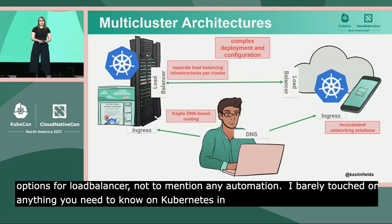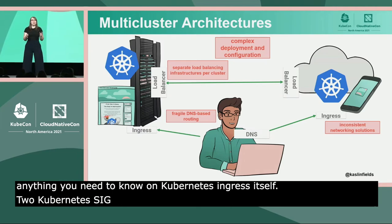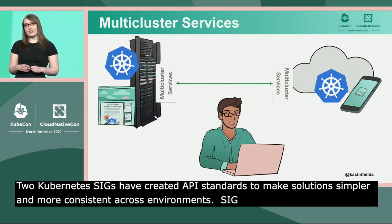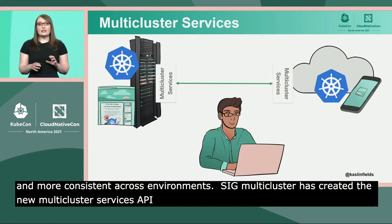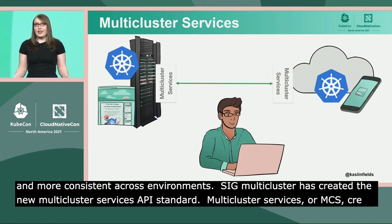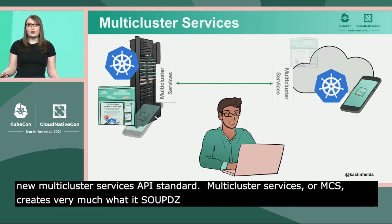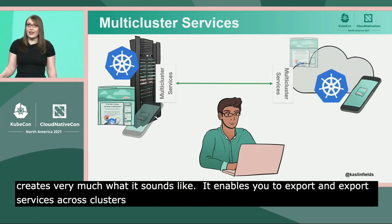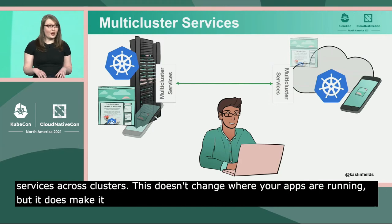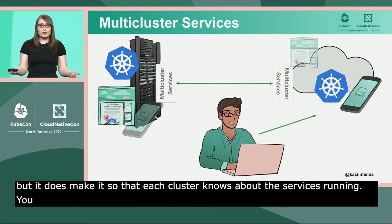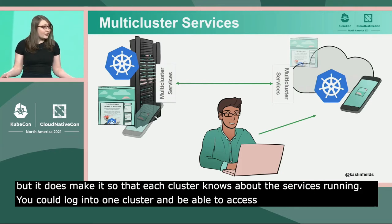Two Kubernetes SIGs have been hard at work creating API standards to help make solutions to these challenges simpler and more consistent across environments. SIG Multicluster has created the new Multicluster Services API standard. Multicluster Services, or MCS, creates a concept in your Kubernetes cluster that enables you to export and import services across clusters. This doesn't change where your apps are running, but it makes it so that each cluster knows about the services running on your other clusters. For example, you could log into one cluster and be able to access all the services that cluster knows about, even if they're actually running somewhere else.